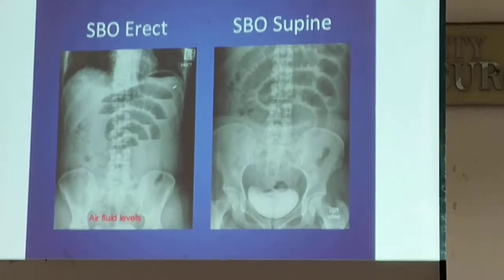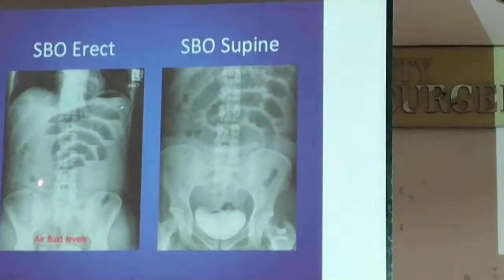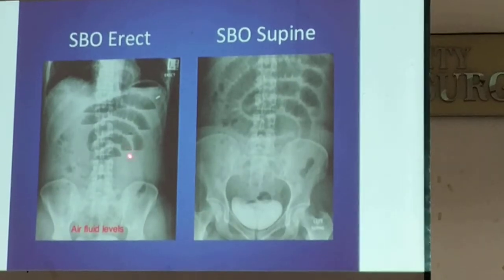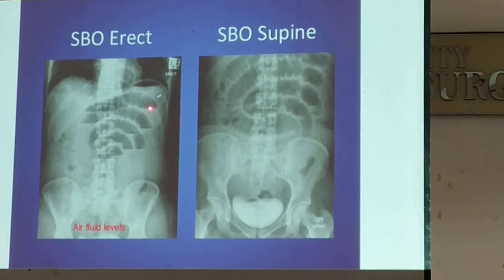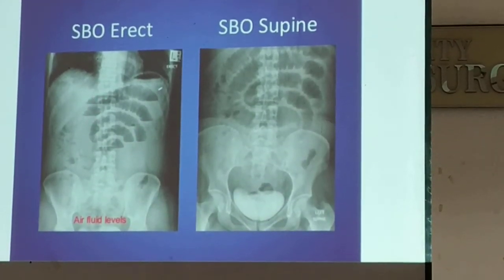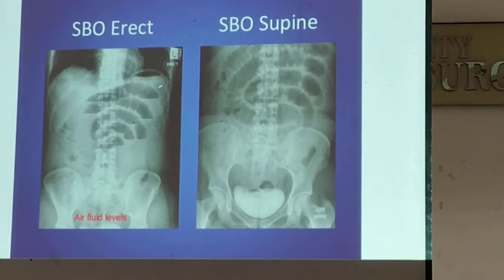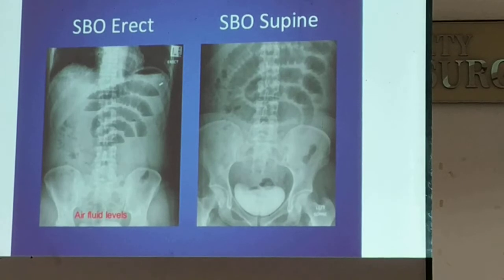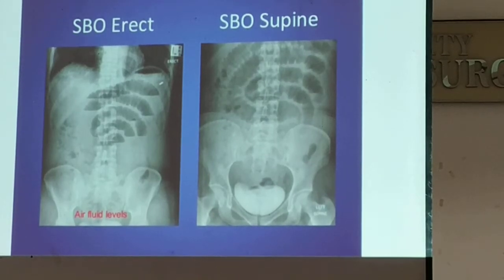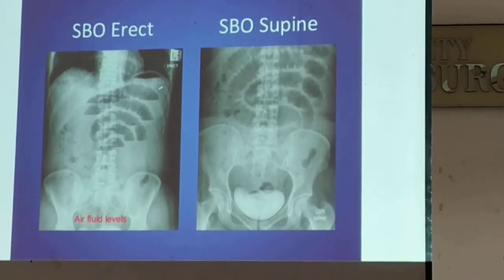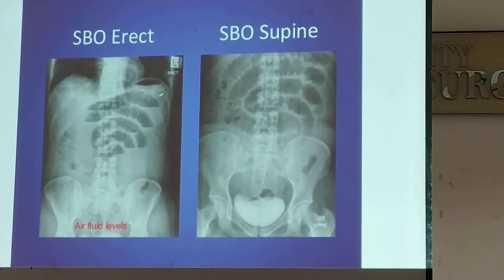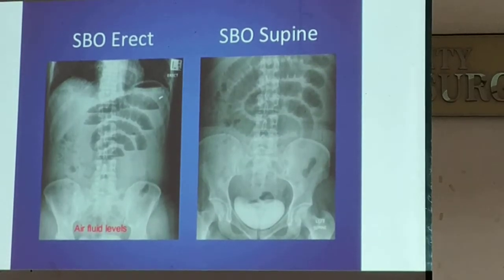Once you do the upright film and you see the step ladder pattern — the air-fluid levels are not at the same level, they ascend like steps — that is what we call the step ladder sign in obstruction. You can see the step ladder sign in any form of intestinal obstruction, be it small or large bowel obstruction.